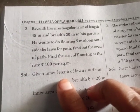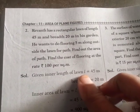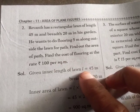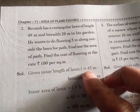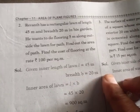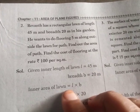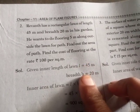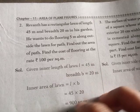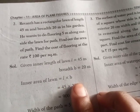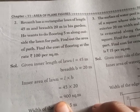Given: inner length of the lawn L is equal to 45 meters, B is equal to 20 meters. Inner area of the lawn is equal to L into B, which is equal to 45 into 20, which is equal to 900 square meters.